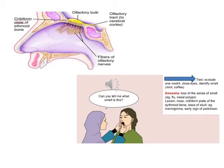Abnormality of smell may be unilateral or bilateral. Unilateral loss is usually associated with neurological disorders, and bilateral loss is usually associated with local ENT causes.